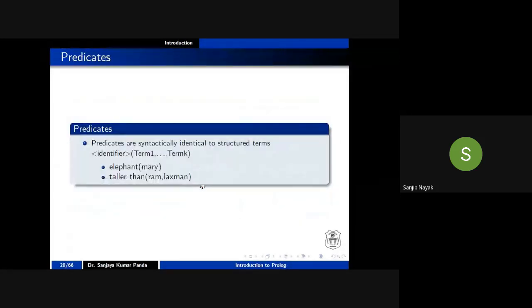A predicate — as you have seen, we write 'elephant mary' or 'rami is taller than lakshman'. These are called predicates, or as I told you in the last class, these are called facts. Every statement must end with a dot.